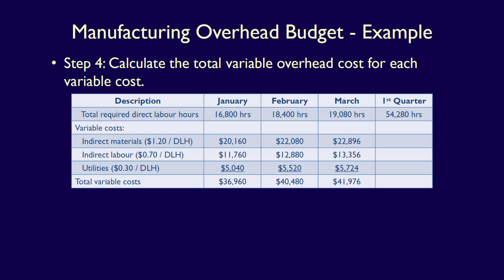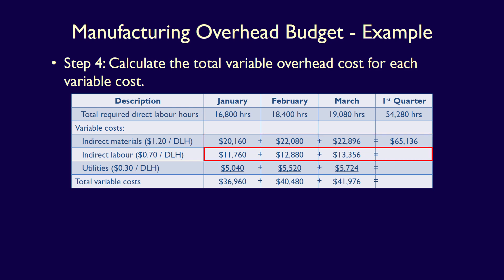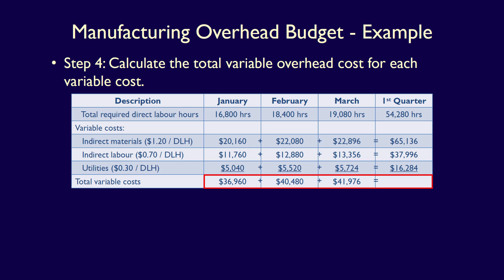We now calculate the total for the first quarter by adding each of the rows for January, February, and March. For indirect materials: $20,160 plus $22,080 plus $22,896 equals $65,136. For indirect labour: $11,760 plus $12,880 plus $13,356 equals $37,996. For utilities: $5,040 plus $5,520 plus $5,724 equals $16,284. And for total variable costs: $36,960 plus $40,480 plus $41,976 equals $119,416.